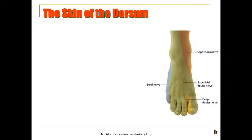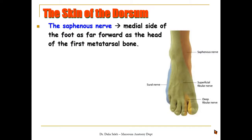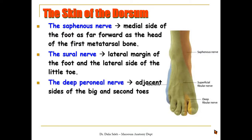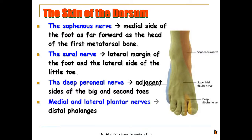At the skin of the dorsum of the foot, many nerves share in its nerve supply. The saphenous nerve carries sensation from the medial side of the foot as far as the ball of the big toe. On the lateral side of the foot and little toe, the sural nerve carries sensation from this area. The deep peroneal nerve supplies the adjacent sides of the big toe and second toe at the first cleft. The medial and lateral plantar nerves supply the nail beds of the toes. The rest of the dorsum of the foot is supplied by the superficial peroneal nerve.